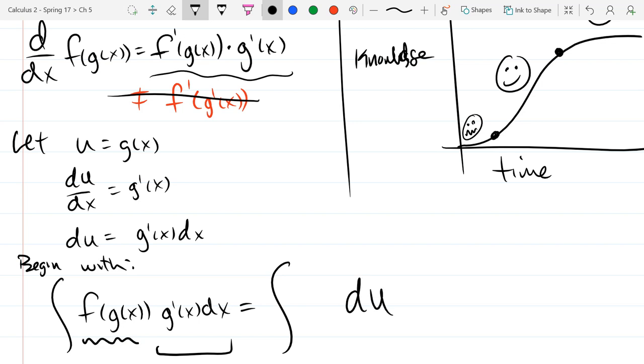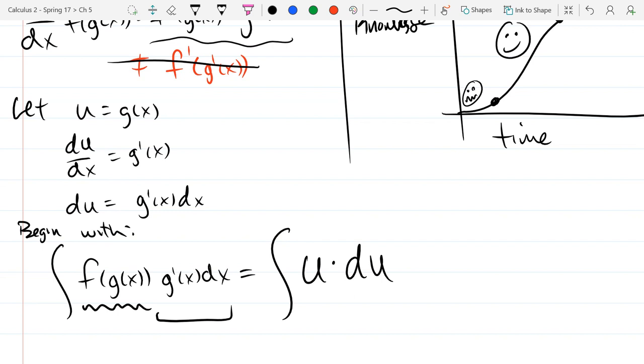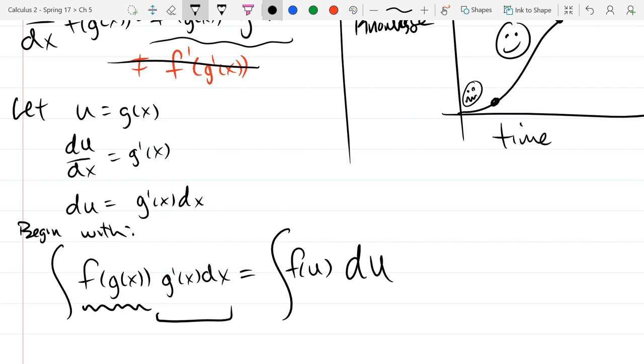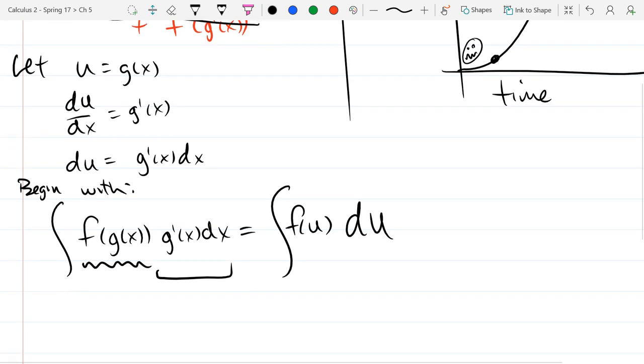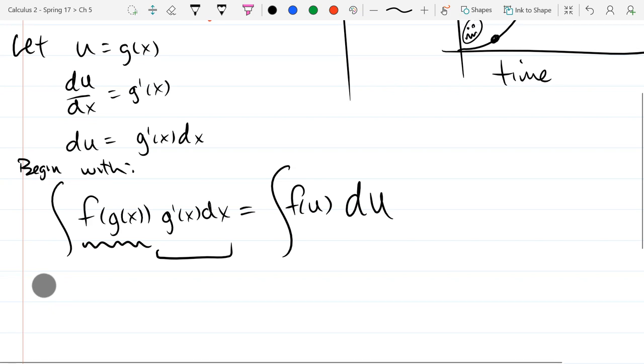And what is f of g of x? That's just u right there. So this integral turns into... oh, uh oh. That's not u. What goes there instead? F of u. Oh yeah, f of u. Or f(u) du. All right. So we can turn a more complicated looking integral into something easier if we have a very good u that has a derivative that's already hanging out right there.